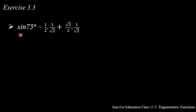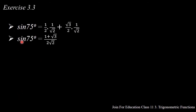Therefore, sin 75 degrees equals (1/2)(1/√2) plus (√3/2)(1/√2). Sin 75 degrees equals 1/(2√2) plus √3/(2√2). Taking the LCM of 2√2, we get (1 + √3)/(2√2).